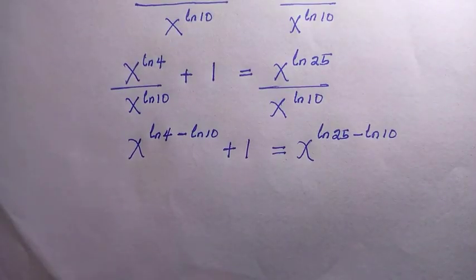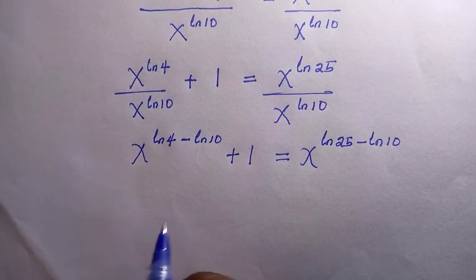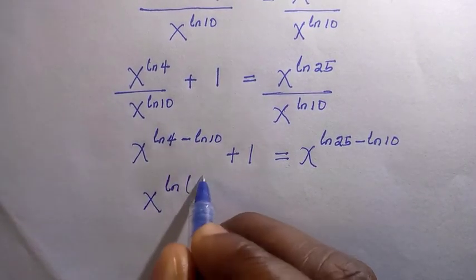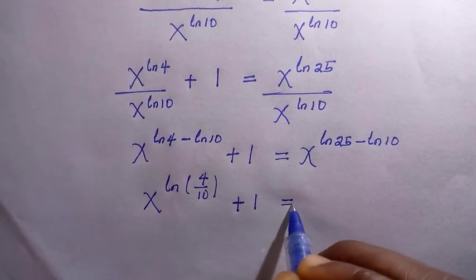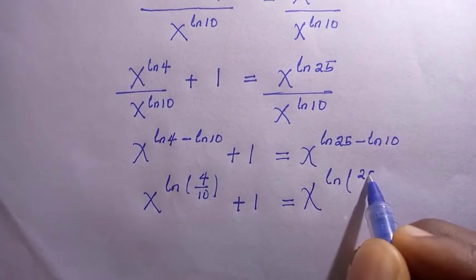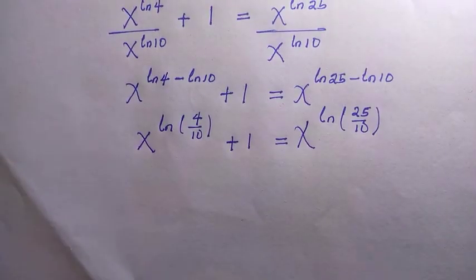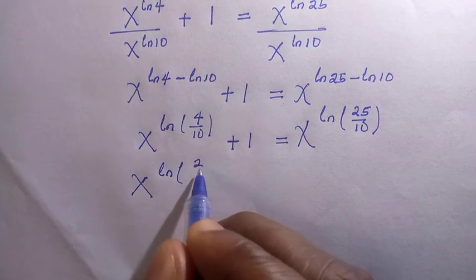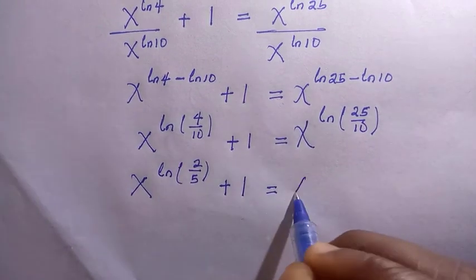Applying the negative law of indices and log properties, the left side becomes x raised to the power of negative ln of 10 over 4, plus 1, and the right side becomes x raised to the power of ln of 25 divided by 10.